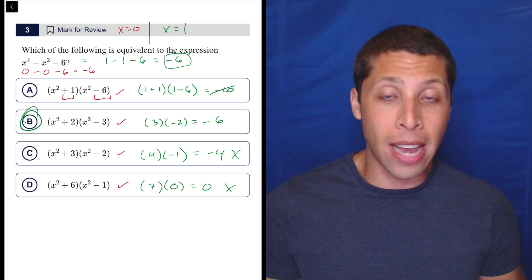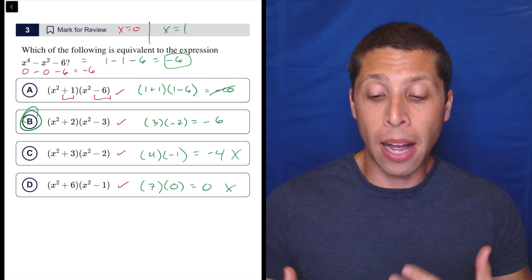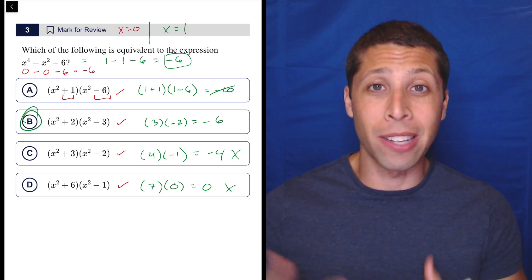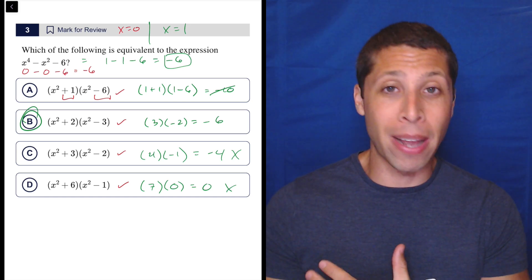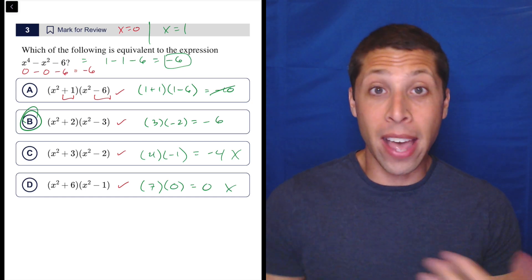Now we could enter all of these things into Desmos and compare the graphs and see which one overlaps, but that's also time consuming. I think it's better to get really comfortable with the way that zero and one work in many situations.